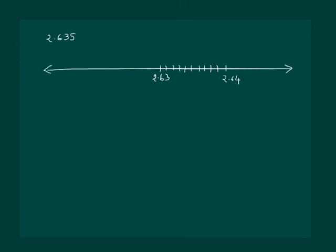On magnification and division into 10 equal parts, we get 2.631 and so on. So the fifth mark is the required representation of 2.635.